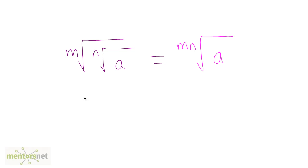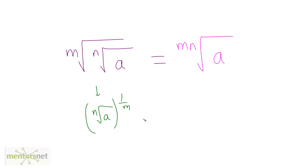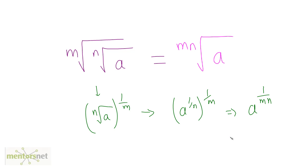The next law: the nth root of the nth root of a is equivalent to the m times n root of a. We can write this as nth root of a raised to 1 by m. Since nth root of a equals a raised to 1 by n, that becomes a raised to 1 by n raised to 1 by m, which equals a raised to 1 by m times n, written as the mn-th root of a.